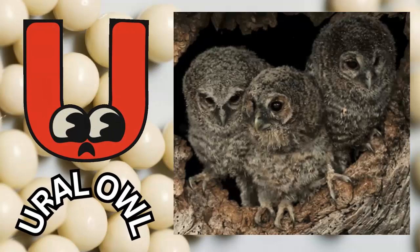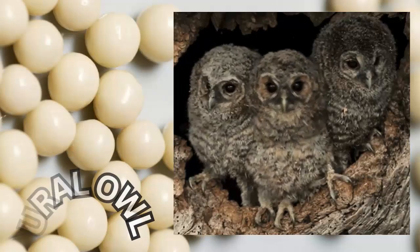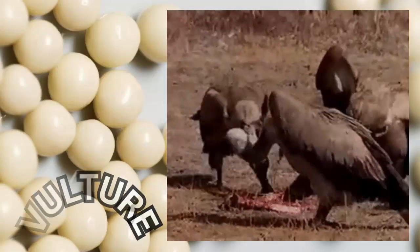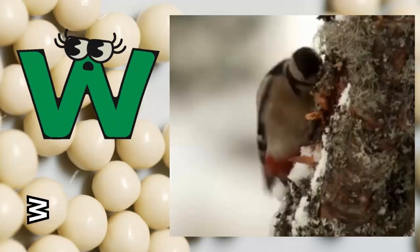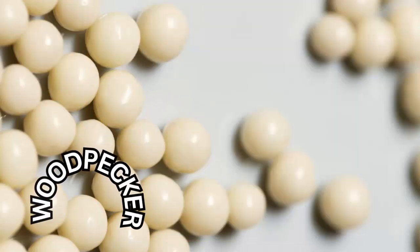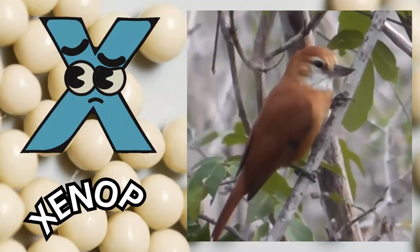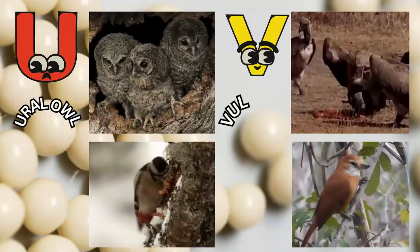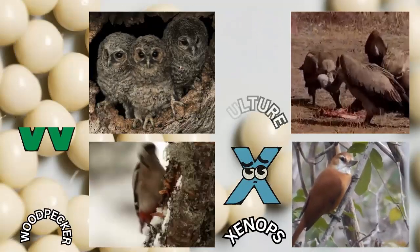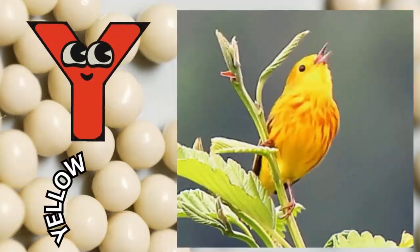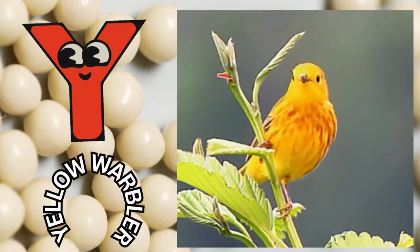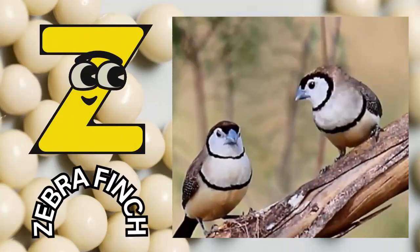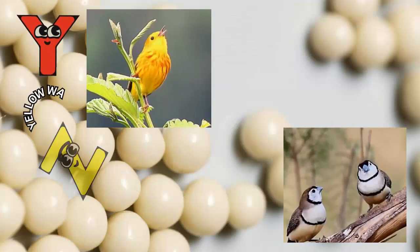U - U for Uralow. V - V for Vulture. W - W for Woodpecker. X - X for Xenops. Y - Y for Yellow Warbler. Z - Z for Zebra Finch.